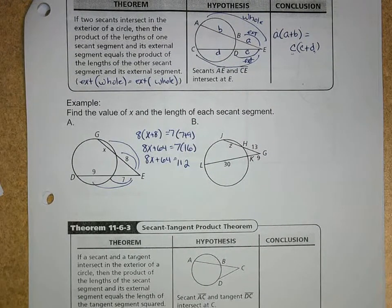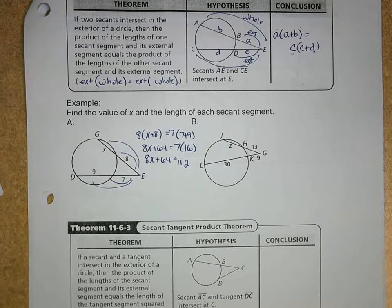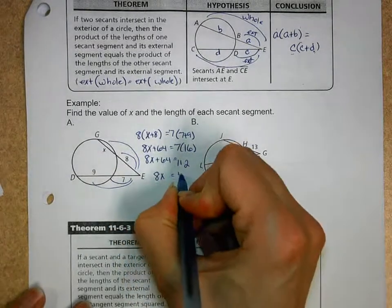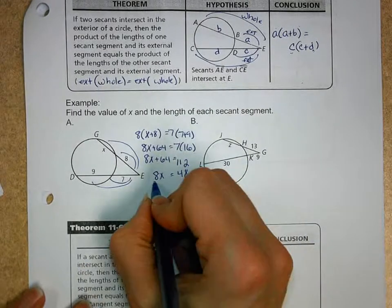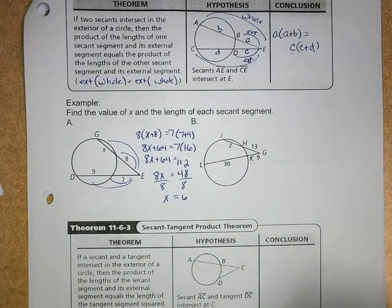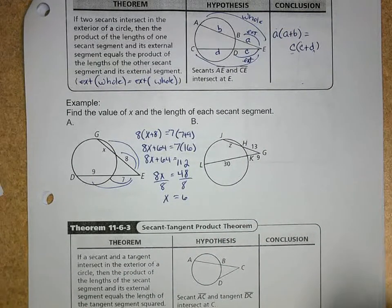Now after that, we're going to subtract 64 from both sides. So we get 8X is equal to 48. Divide both sides by 8. X is equal to 6.